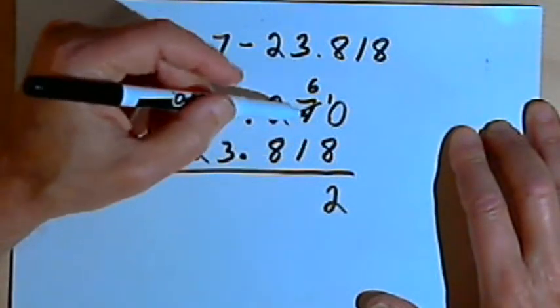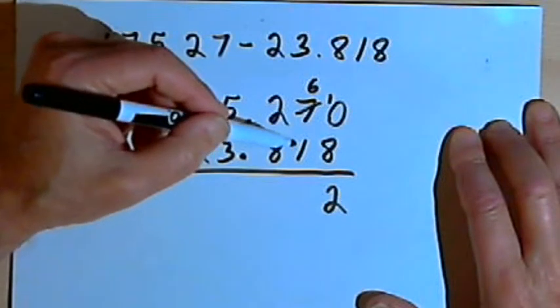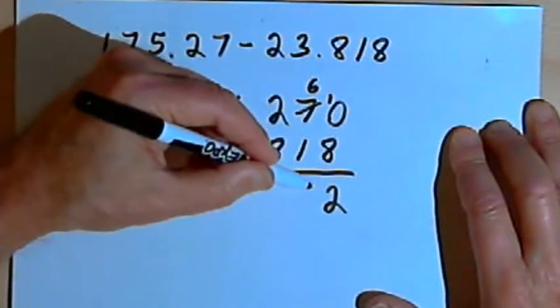In the next column over, the hundredths column, I'm subtracting 1 from 6, and that's 5.